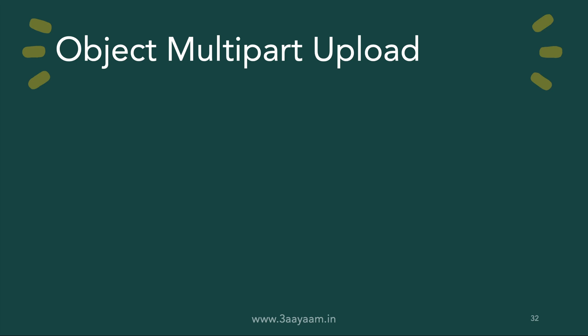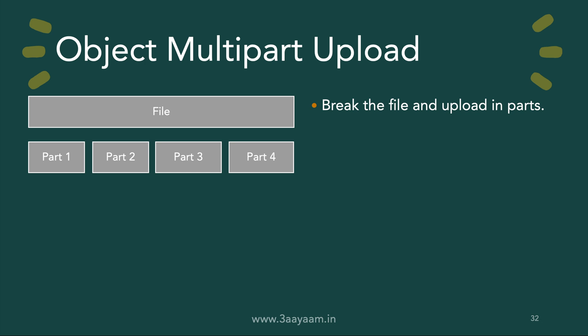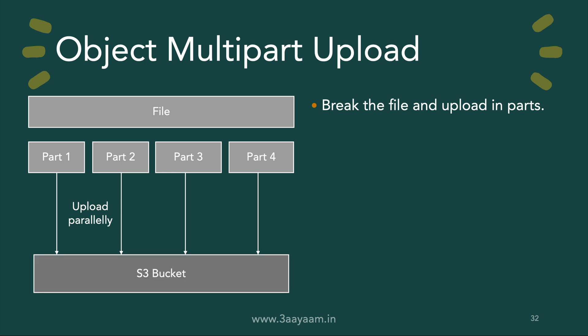Uploading a large file can take a fair amount of time. If the file size is pretty big, it takes a long time to upload to your S3 bucket. Typically, if your file size is more than 100 MB, you should not upload it in one go. You should use something called multi-part upload, which basically breaks the file and uploads it in parts. You can break the file into multiple pieces and then upload them in parallel to the S3 bucket.